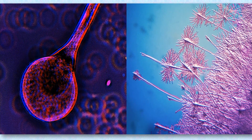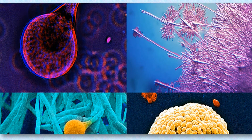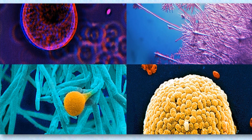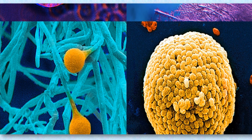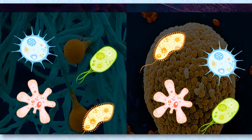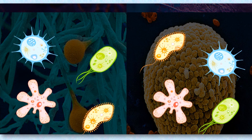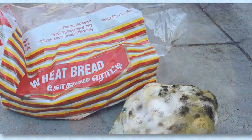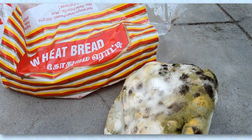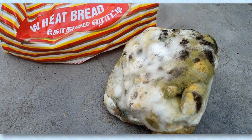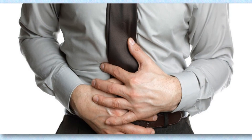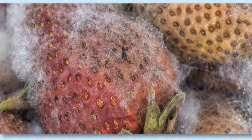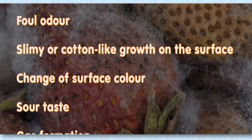Food-spoiling microbes: Microorganisms such as fungi and bacteria are responsible for the spoilage of various foodstuffs. The microbes start growing in suitable conditions such as warm temperatures, moisture, and air. They produce toxic substances which make the food unfit for consumption and may cause serious illness due to food poisoning. The growth of harmful microbes is indicated by foul odour, slimy or cotton-like growth on the surface, change of surface colour, sour taste, or gas formation.